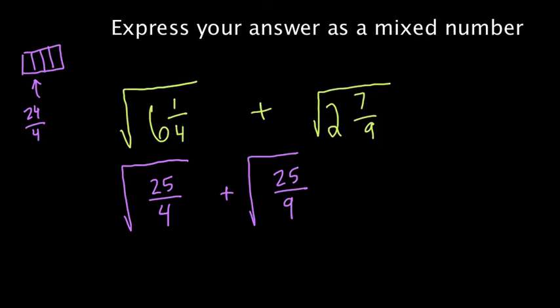Now you take the square root of a fraction, you could just take the square root of numerator and denominator. It's a basic law of exponents. So here, the square root of 25 is 5, the square root of 4 is 2. And over here we have the square root of 25, which is 5 over 9, which is, the square root of 9, which is 3.